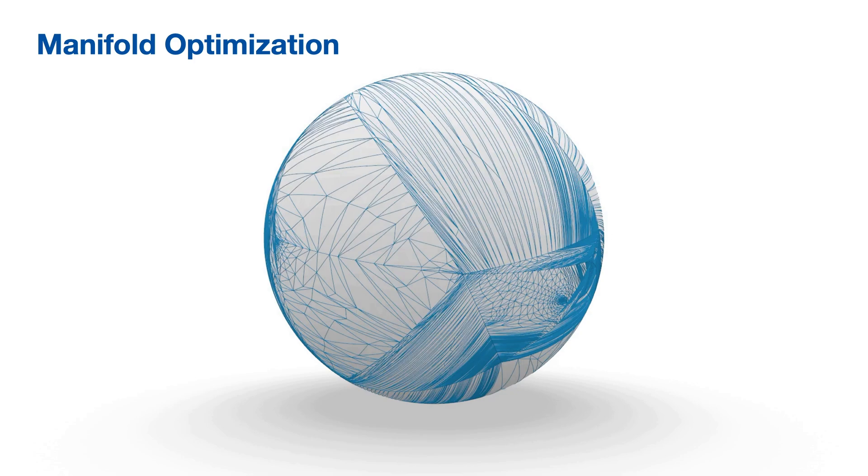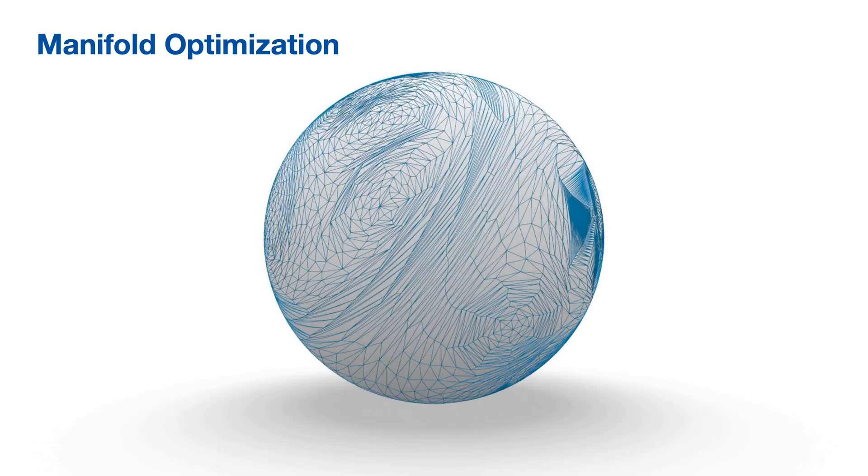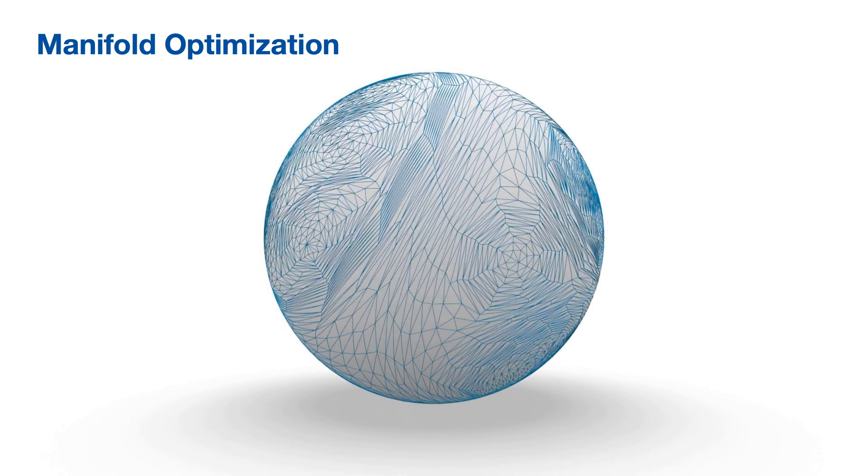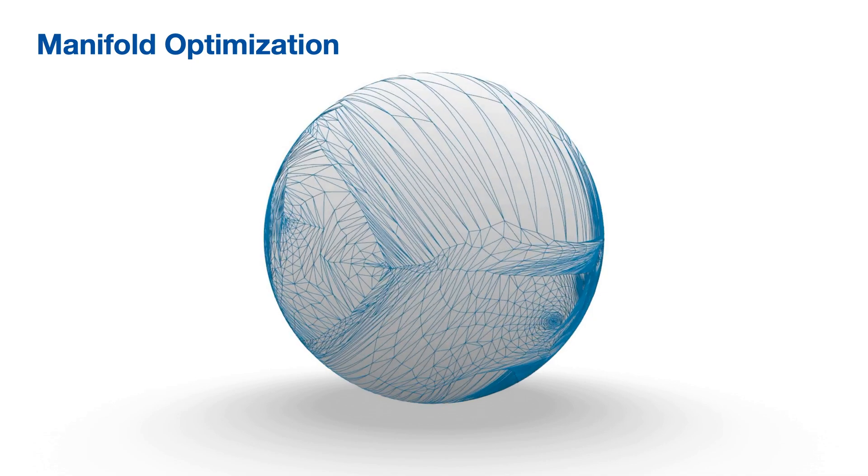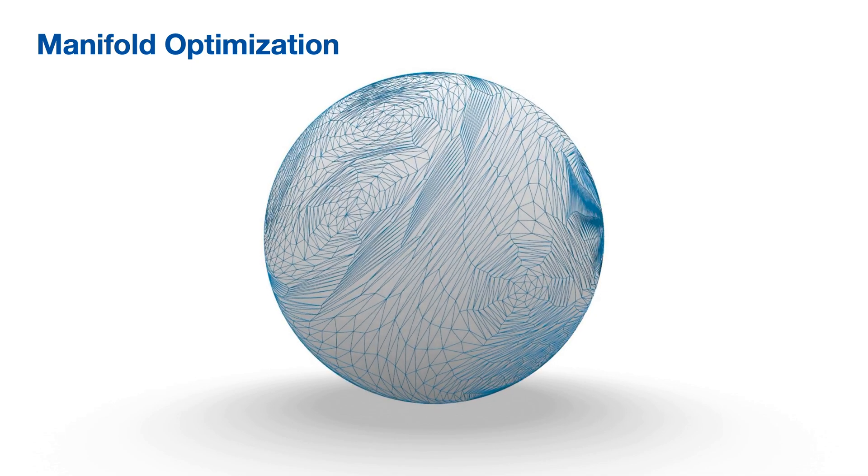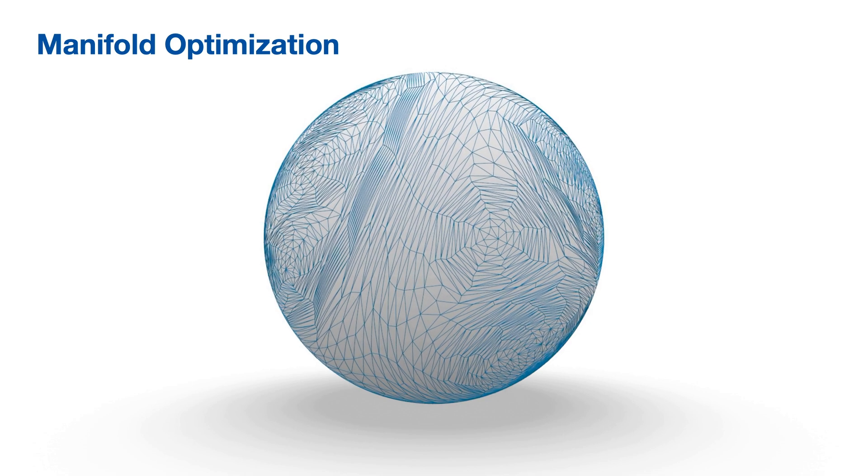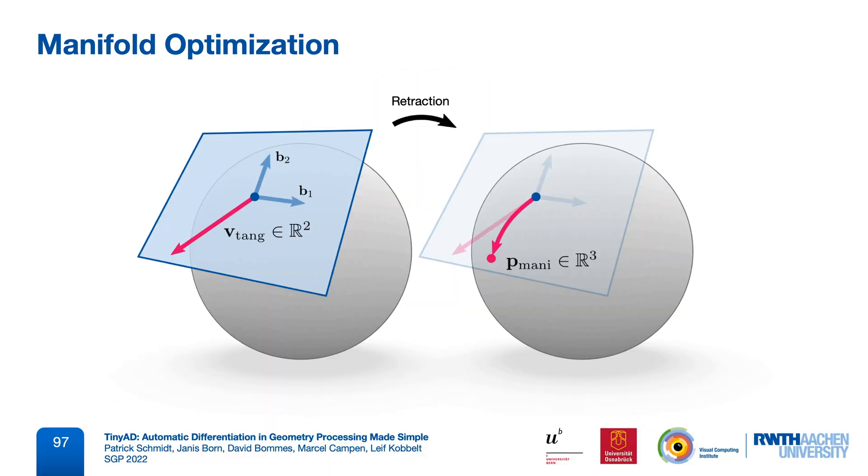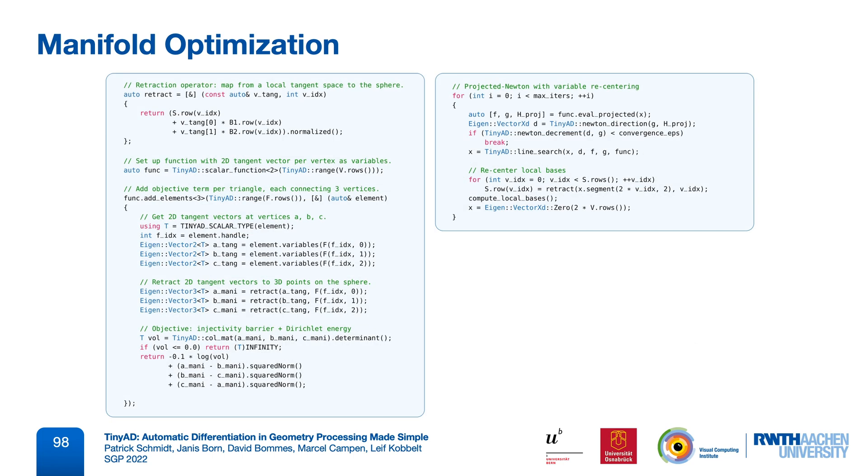For example, if we want to optimize a spherical parameterization, then we have the additional constraint that vertices need to remain on the sphere. And for this we implemented a technique from manifold optimization, where we represent vertex trajectories as tangent vectors, and then wind them around the sphere via a retraction operator. Again, it's possible to write all of this with very little code, and we can easily differentiate both the distortion measure and the retraction operator at once.